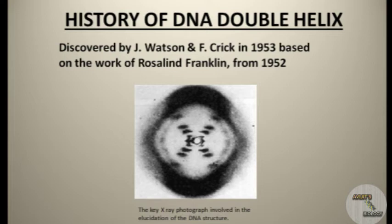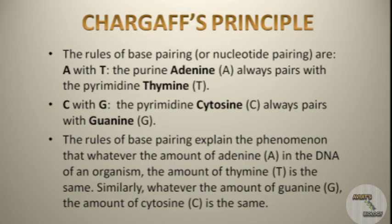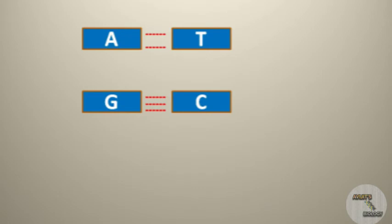According to Chargaff's base-pairing rule, adenine always pairs with thymine and cytosine always pairs with guanine. The ratio of purine and pyrimidine bases is 1:1, meaning the amount of adenine equals the amount of thymine, and the amount of cytosine equals the amount of guanine. Adenine pairs with thymine by 2 hydrogen bonds, and guanine pairs with cytosine by 3 hydrogen bonds.